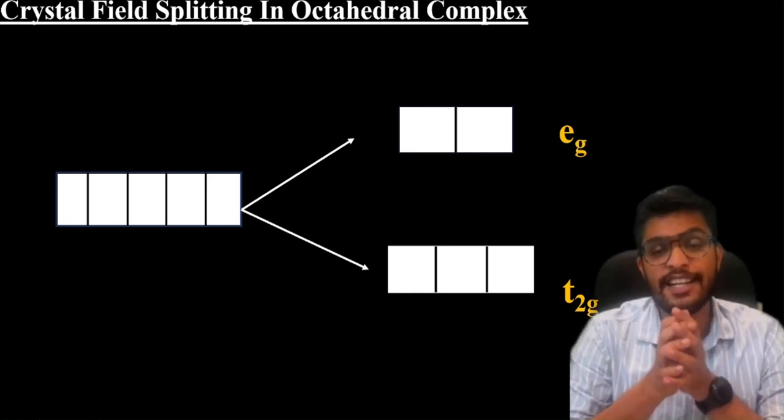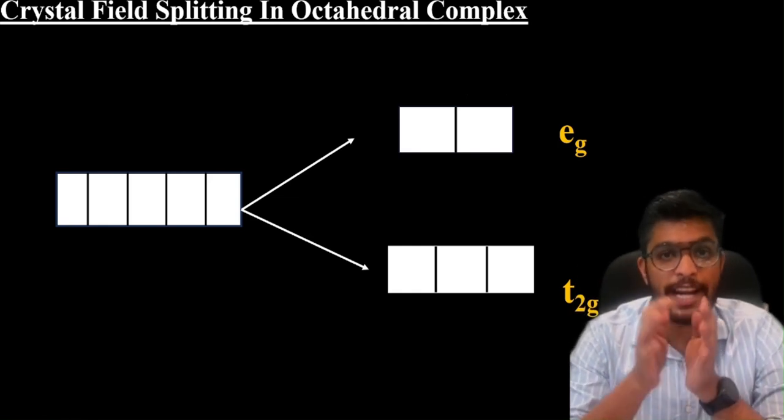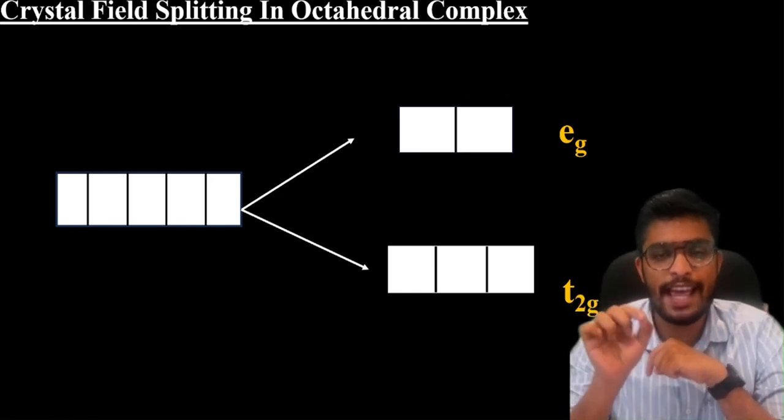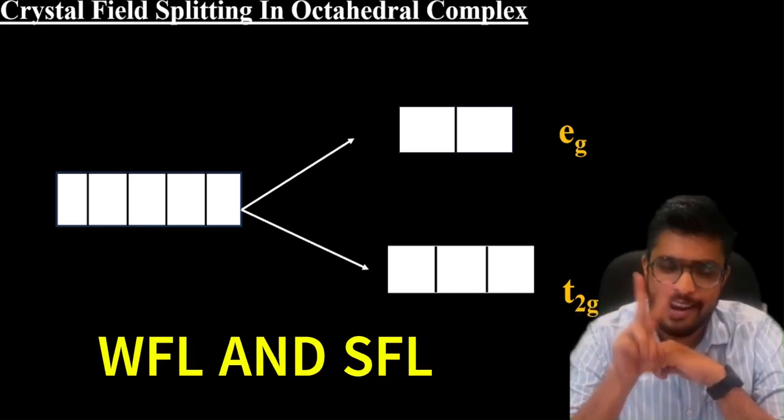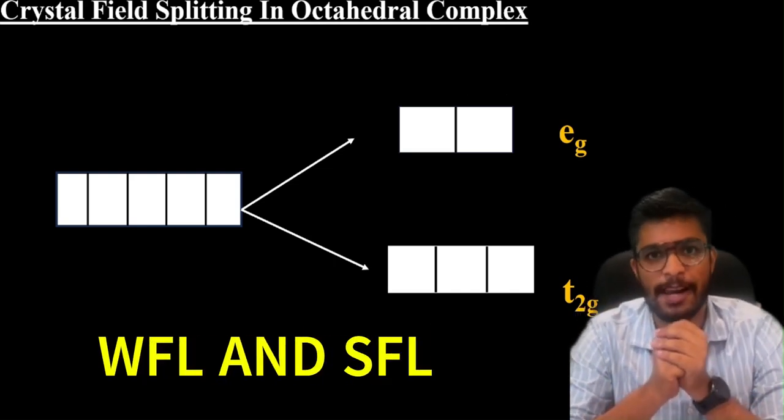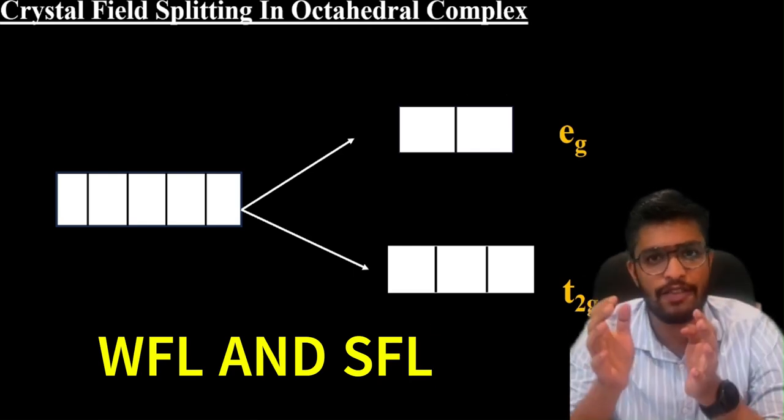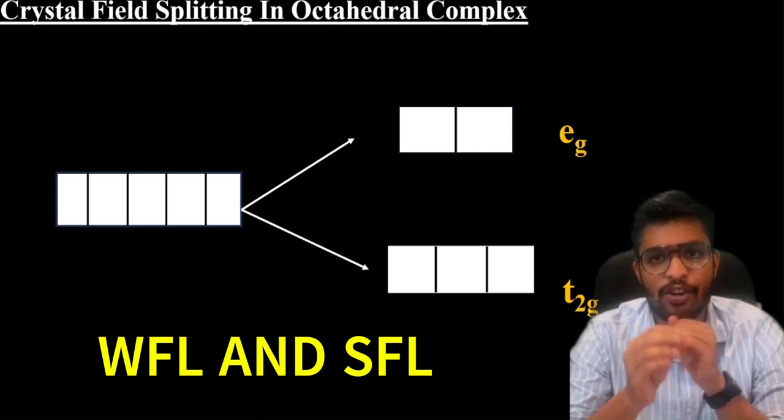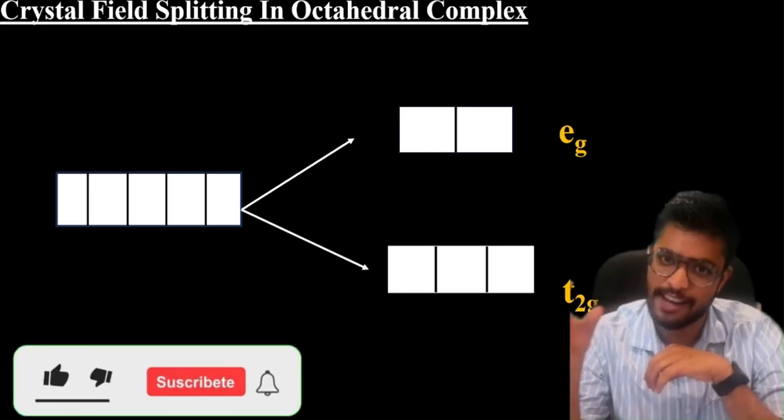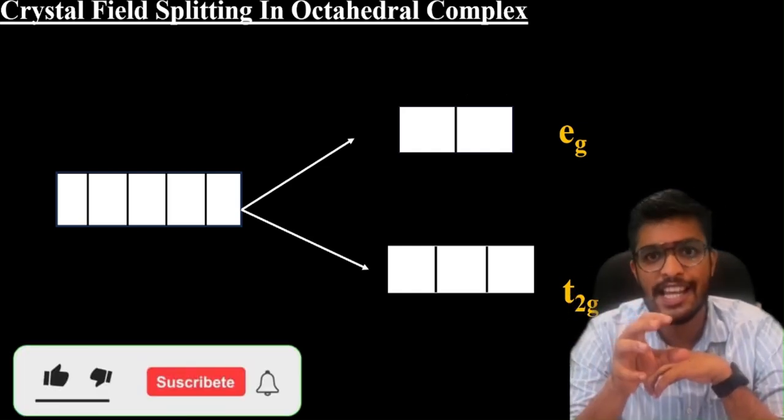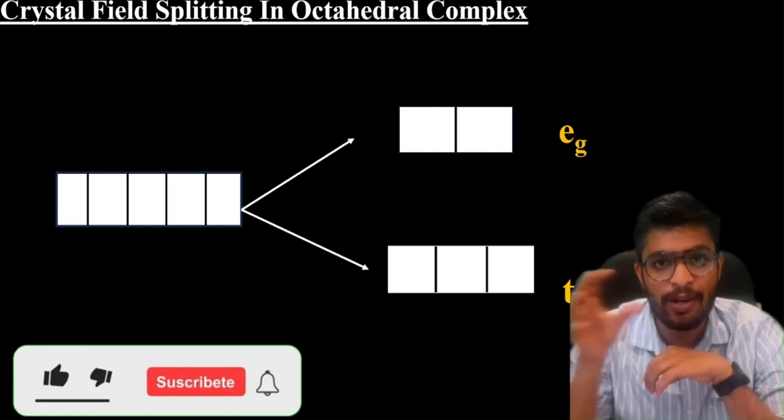In one octahedral complex ML6, where L represents ligands, there are two types of ligands: weak field ligand and strong field ligand. How does electron distribution occur in weak field and strong field ligands? Asymmetrical arrangement is what leads to Jahn-Teller distortion.